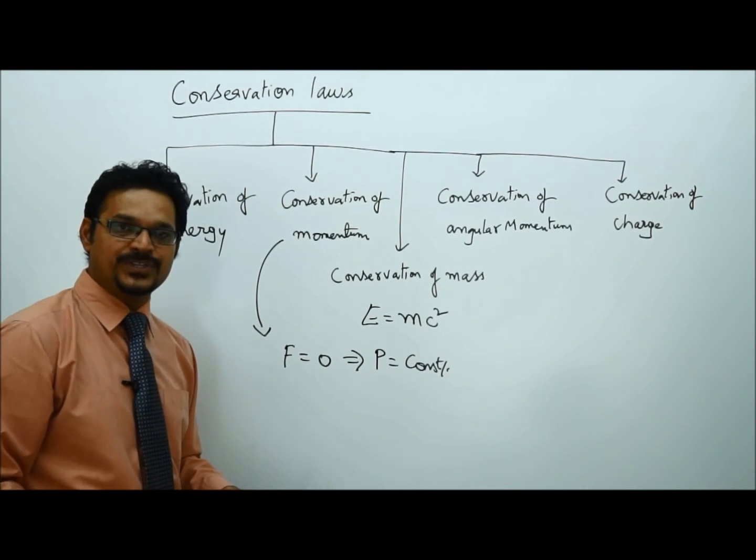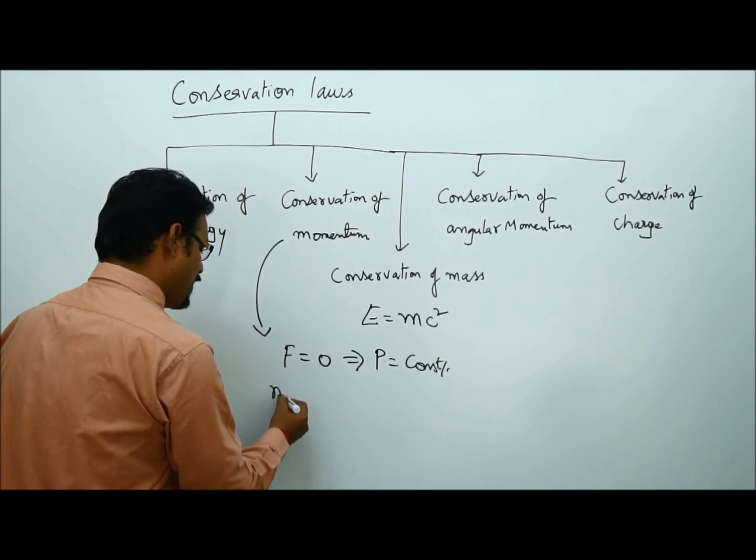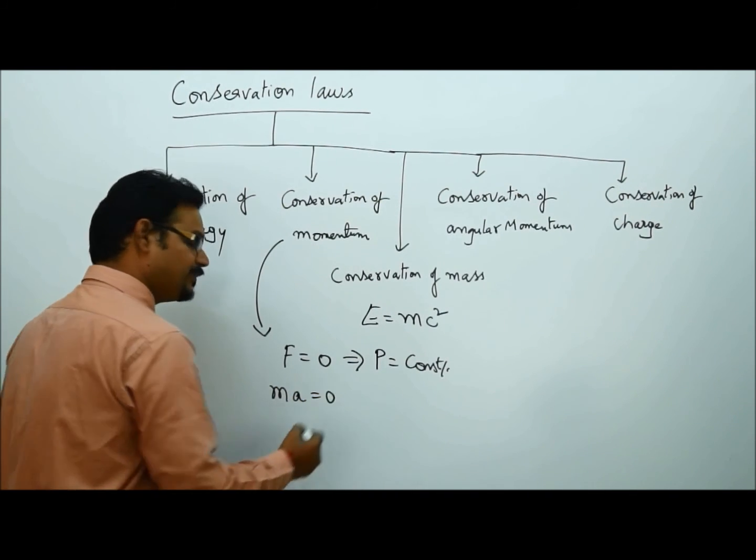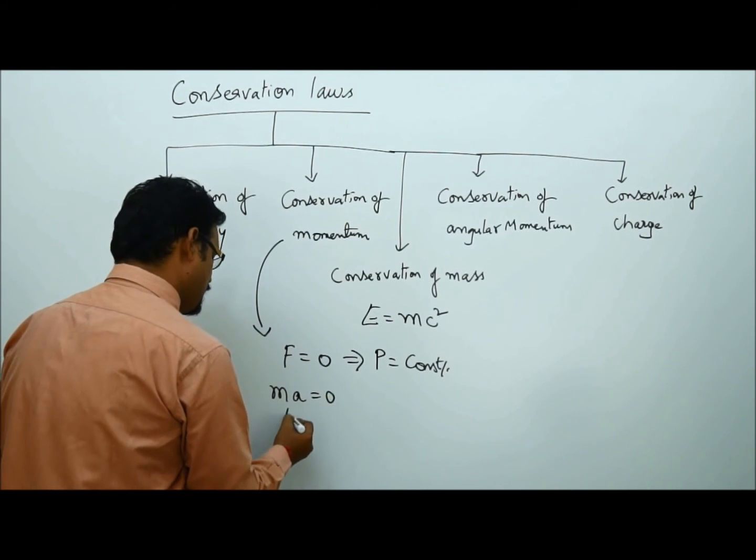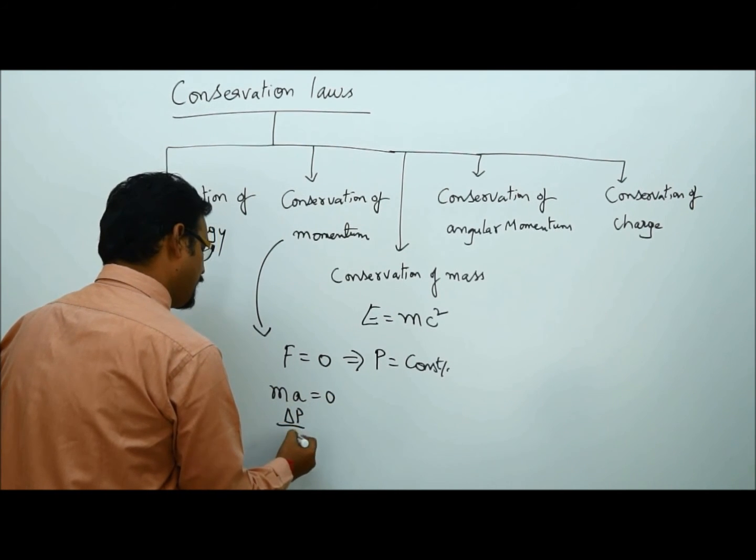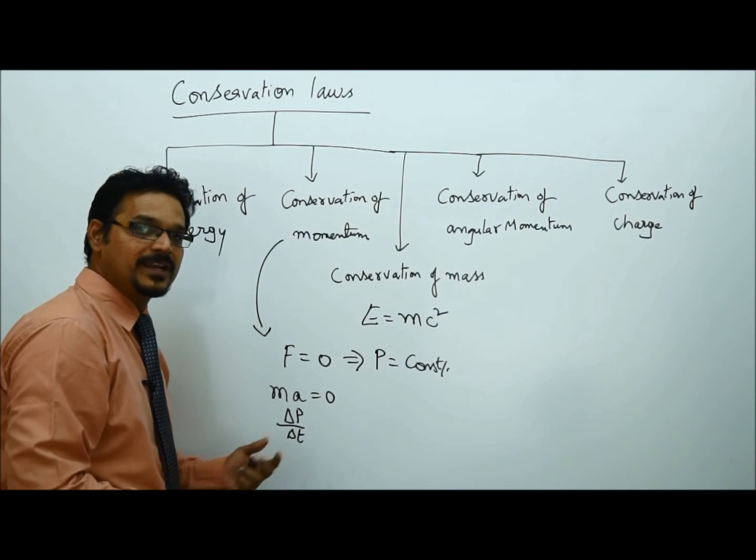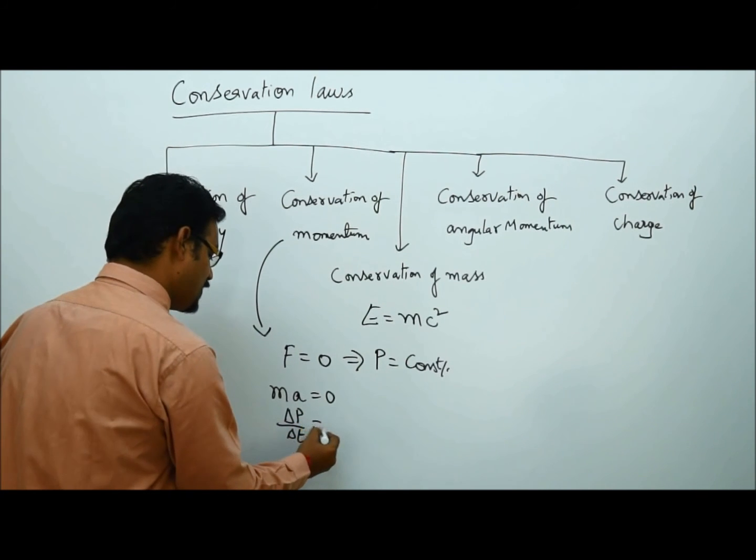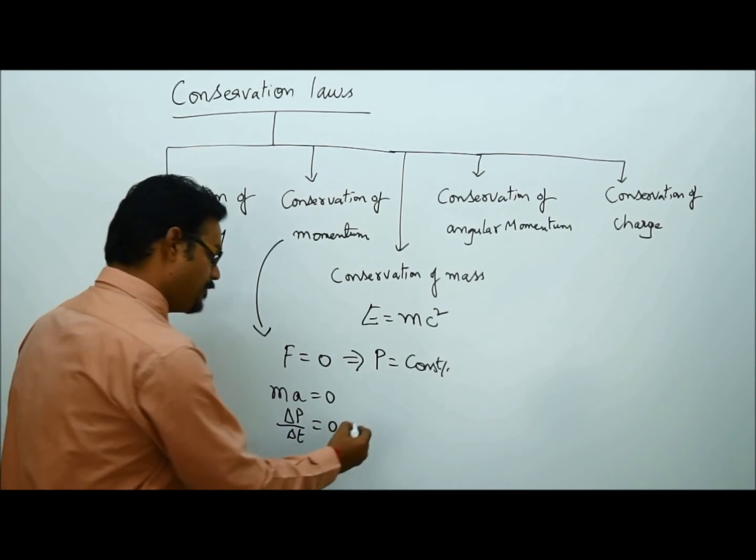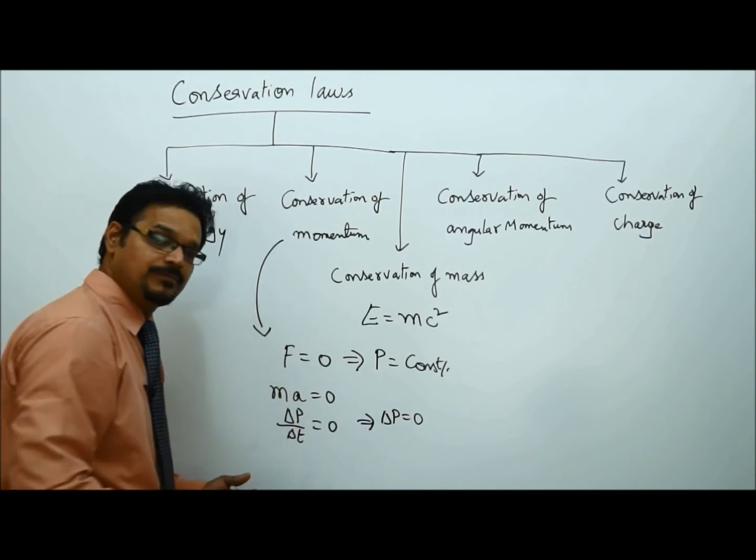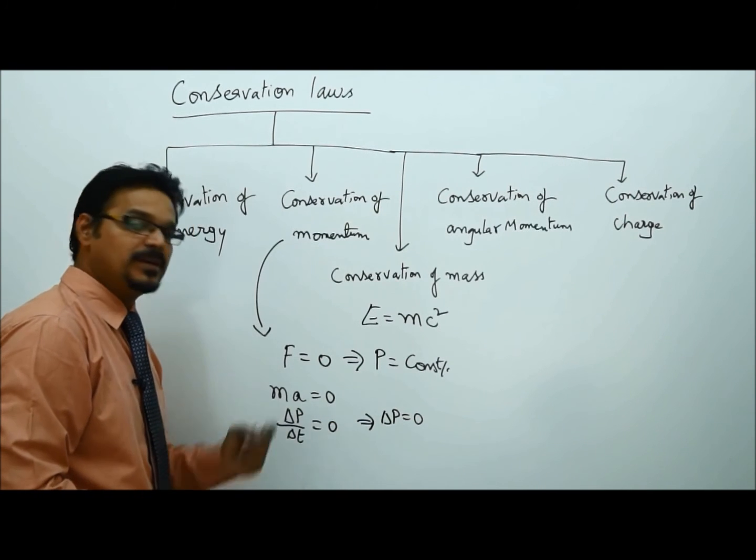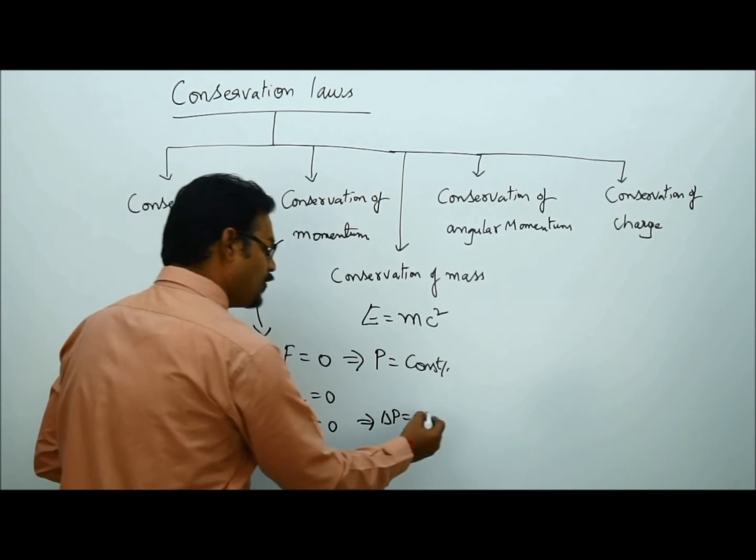F formula according to Newton's second law, you know, F is MA, MA equals zero. This MA can also be written as delta P by delta T. We learned in the earlier class. Equals to zero. Implies delta P equals zero, because delta T goes to right-hand side, multiplied by zero, it becomes zero.